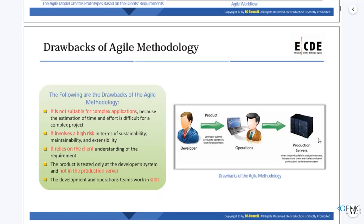Agile relies on the client's understanding of the requirement. Also, the product is tested only at the developer system, not in a production server. A developer system is a small-scale environment. What we can do instead is have a production-like simulation — what we usually call the test environment — where we test the application. It is deployed and operated like production, but it is not the exact production server.